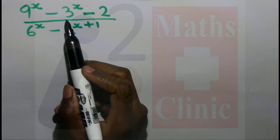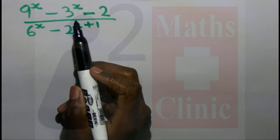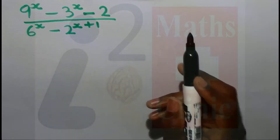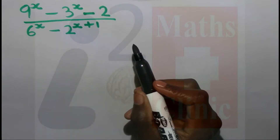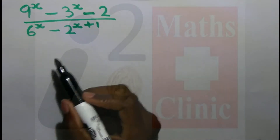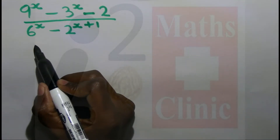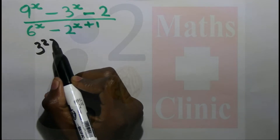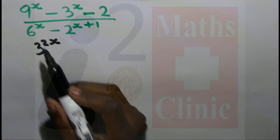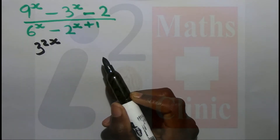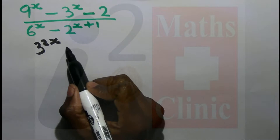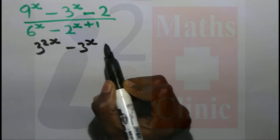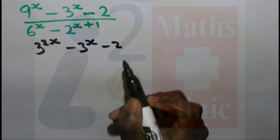9 to the x minus 3 to the x minus 2. 9 to the x is equal to 3 to the exponent 2x, because 9 equals 3 squared. Then minus 3 to the x minus 2.